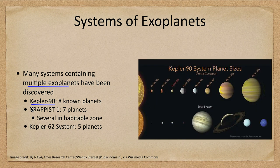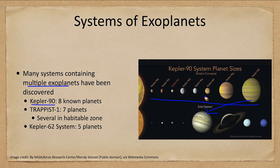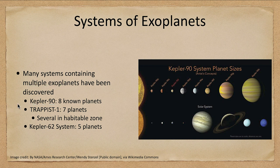Looking at the Kepler-90 system to size scale rather than orbital scale — these are all big planets. The largest is bigger than Jupiter, and there are two very large planets. The others are more Uranus- or Neptune-sized, and even the smaller ones are larger than Earth. It's a very interesting system — remember all of these orbit closer to their star than Earth does to our Sun, so we have to rethink our models of how planets form.